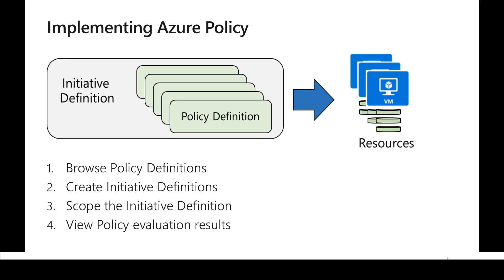Another way is to create something called an initiative. An organization might have a large number of policies - there might be hundreds. For example, diagnostics should be enabled for all virtual machines deployed, or we want to block users from deploying to all regions and allow only East US and West US. It would be a management overhead to assign each individual policy, so we create an initiative, assign multiple policies under it - say 100 policies - and then assign that single initiative to a particular resource or scope.